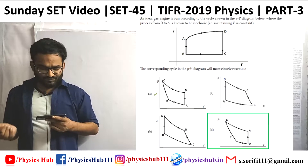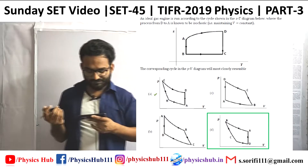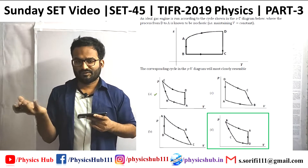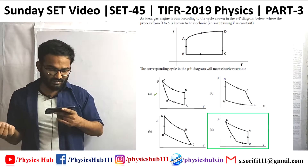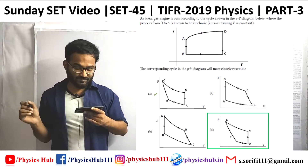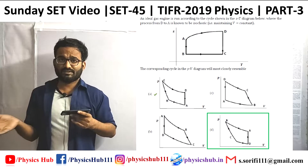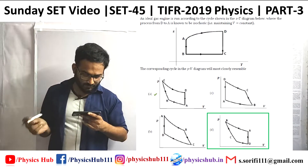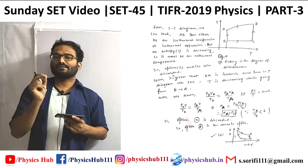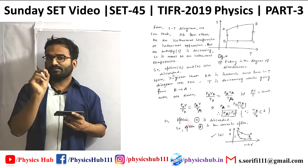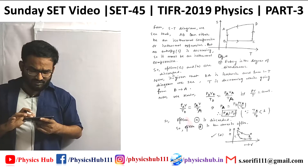Question 3: An ideal gas engine is run according to the cycle shown in the S-T diagram, where the process from D to A is known to be isobaric — wait, isobaric means constant pressure; isochoric means constant volume. The corresponding cycle in the P-V diagram will most closely resemble which option? This type of question needs presence of mind and a careful approach.